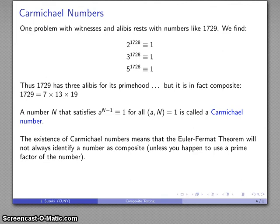This means we can't use the Euler-Fermat theorem by itself to identify whether a number is composite or prime. We have to do something else, and we'll look at that next time.